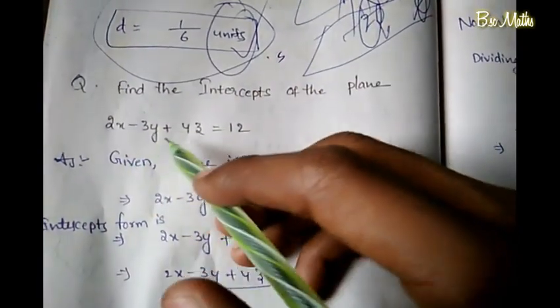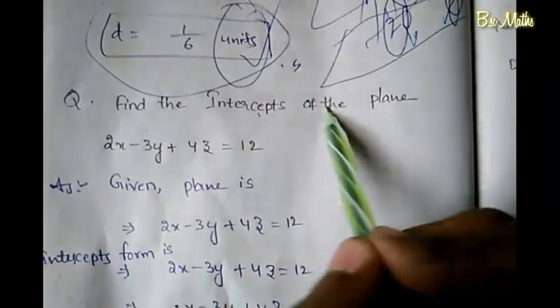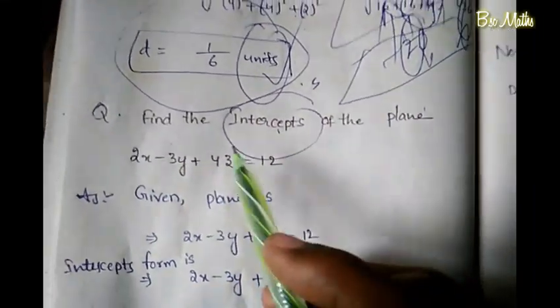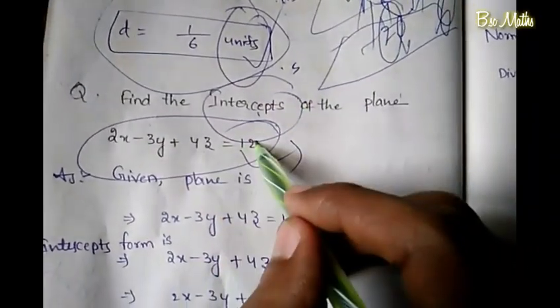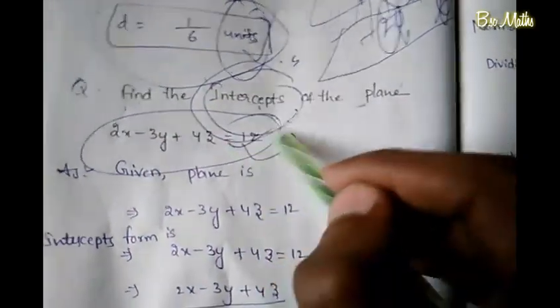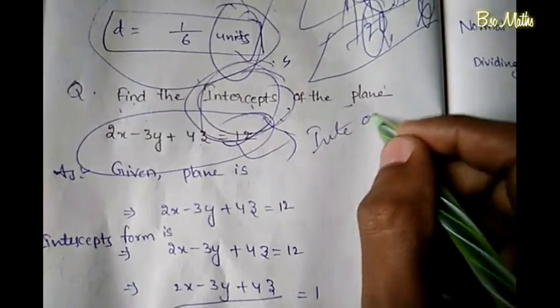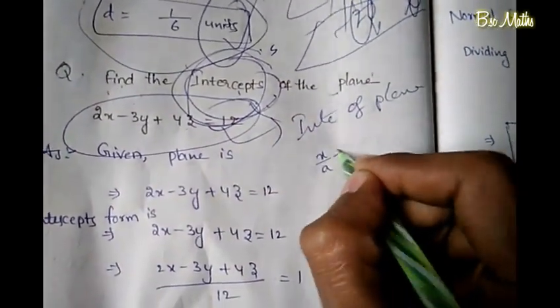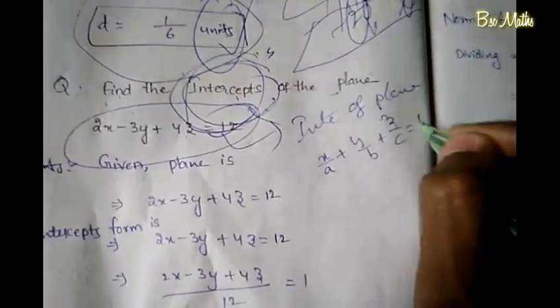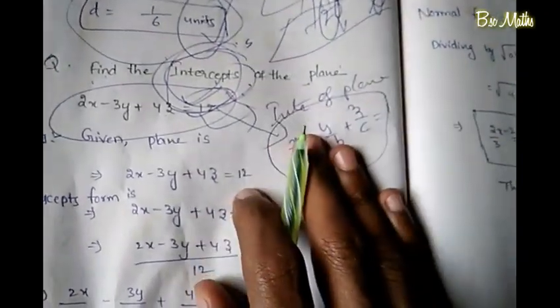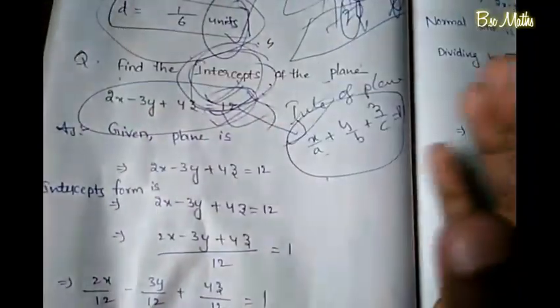Next question: find the intercepts of the plane 2x - 3y - 4z = 12. To find the intercepts, we convert the plane equation to intercept form. The intercept form of a plane is x/a + y/b + z/c = 1. We need to rearrange the given equation into this form.